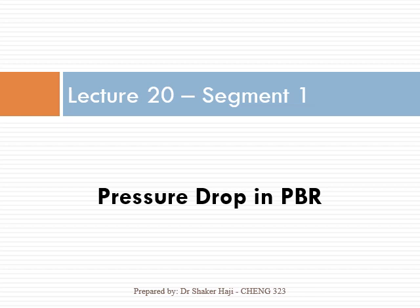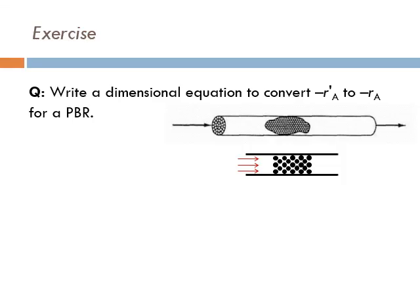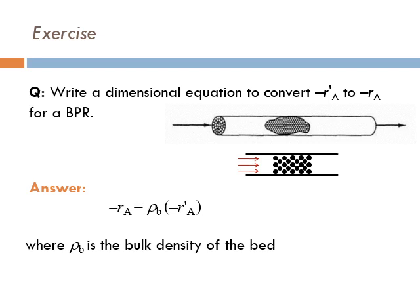We are now in lecture 20 where we're going to talk about pressure drop and packed bed reactors. Before we begin, let me ask something related to packed bed reactors: the rate of reaction. We want to write a dimensional equation to convert -rA', the rate of reaction based on the weight of catalyst, to -rA, the rate of reaction based on the volume of the reactor. The relationship is: -rA equals ρB times -rA'.